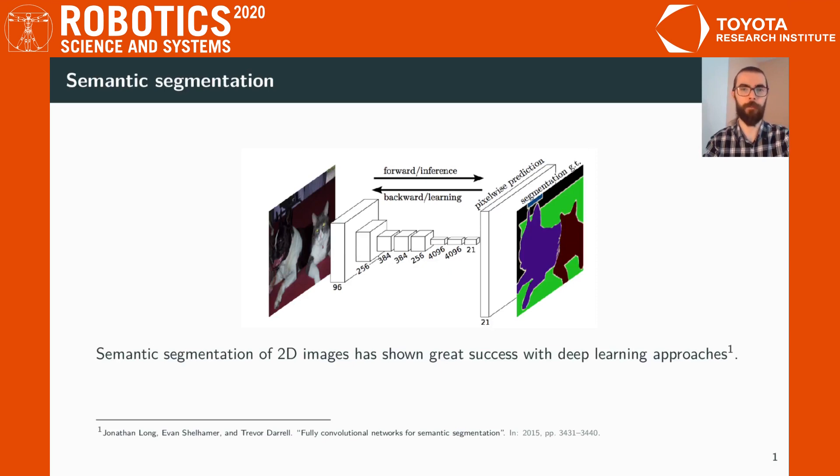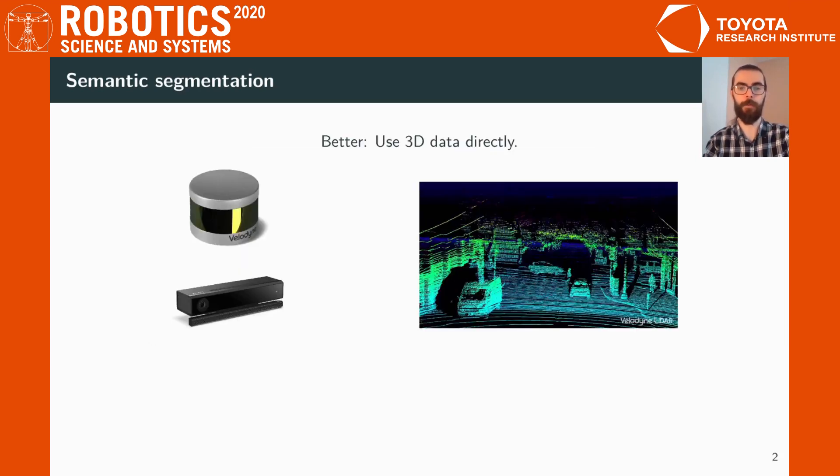Semantic segmentation of 2D images have shown great success with novel deep learning methods. However, the projected nature of images naturally discards information about the 3D scene, for example depth and proximity between objects. A better idea would be to use the 3D data directly, for example point clouds recorded by lidar or Kinect-like sensors.